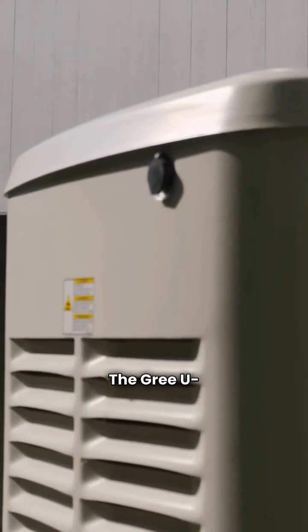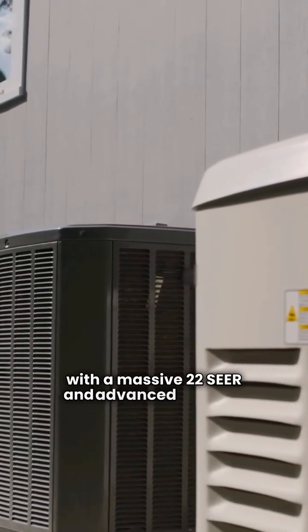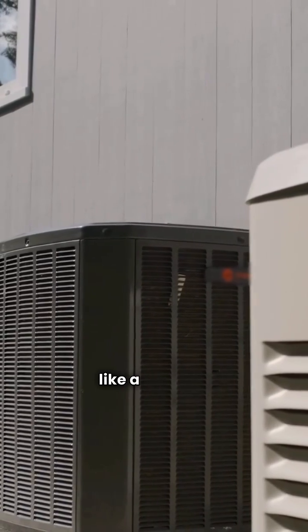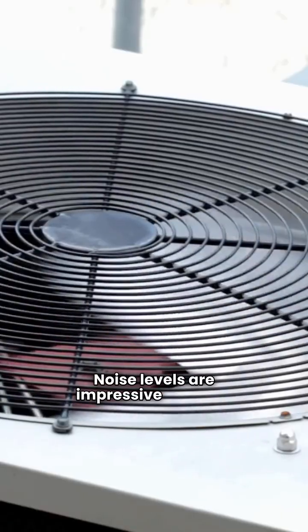The Gree U-Crown is a premium unit with a massive 22 SEER and advanced features like a variable speed condenser fan. Noise levels are impressive too, with 40 decibels inside and 53 outside.